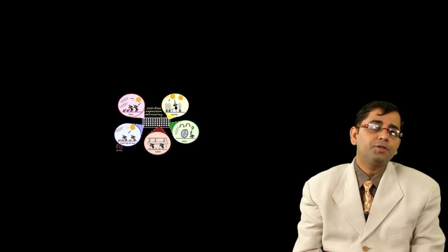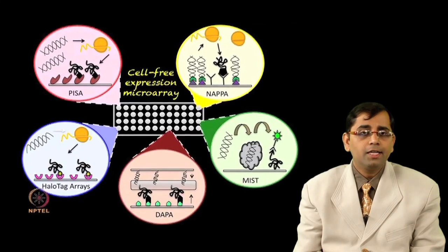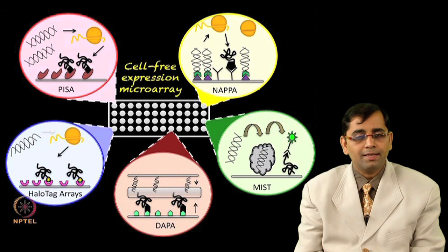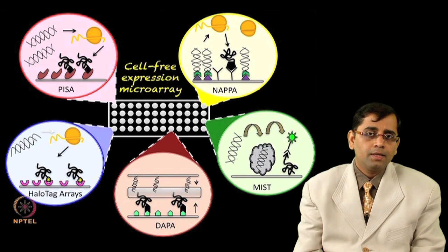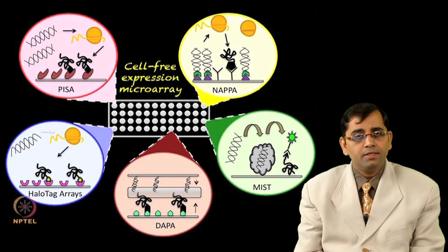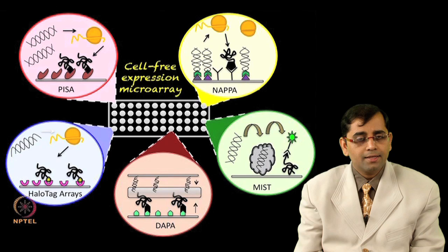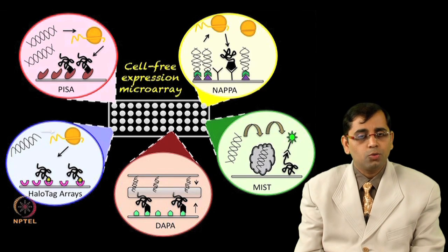In cell-free expression arrays, the DNA encoding a functional protein is expressed through in vitro transcription-translation assays like crude cell lysate, wheat germ extract, rabbit reticulocyte lysate, etc. Such innovations in technology have led to the rise of cell-free expression-based protein microarray techniques shown in the slide, which will be discussed in detail in this course.